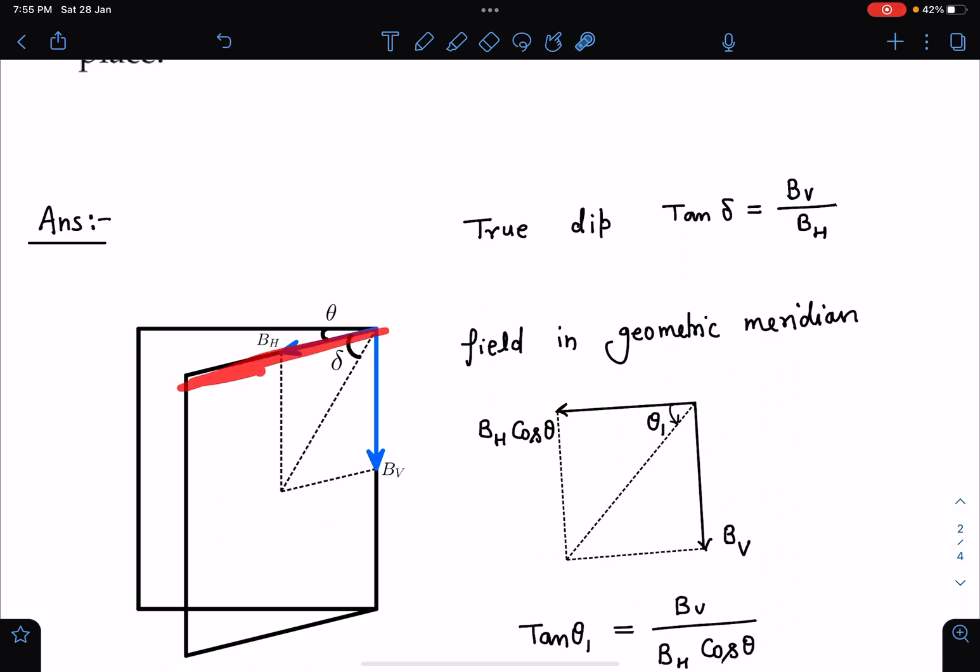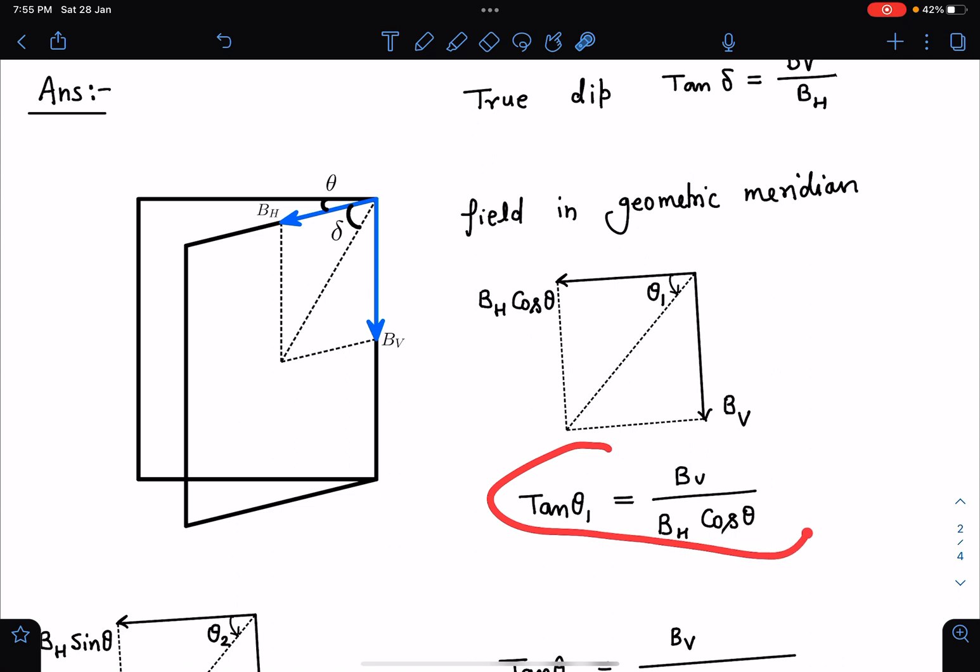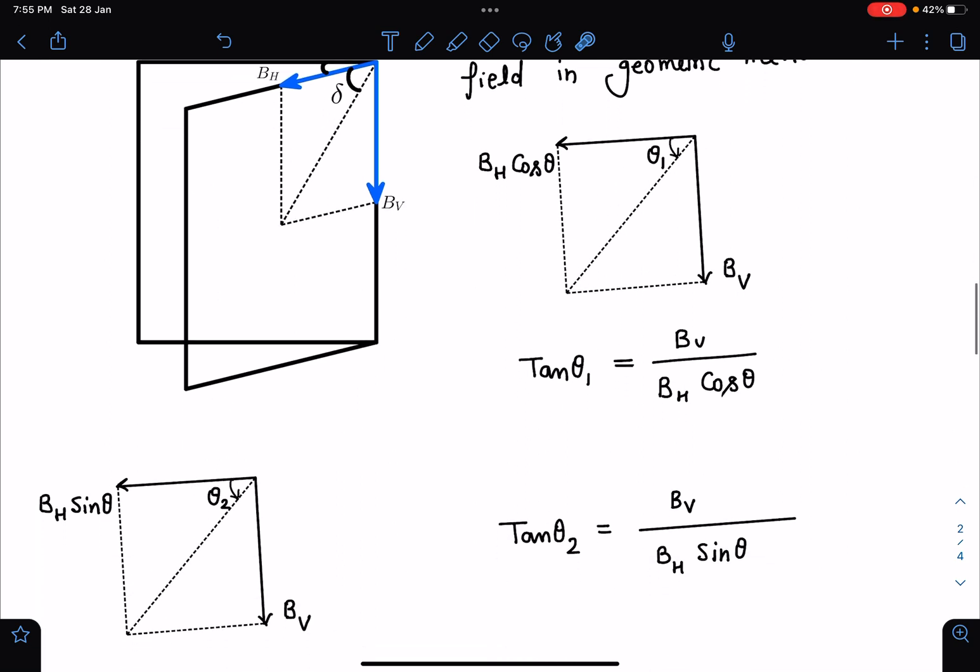You can see here this is the Bₕ and its horizontal component is Bₕ cos θ. So here tan θ₁ I can write as Bᵥ/(Bₕ cos θ). This is the first equation which is given to us.